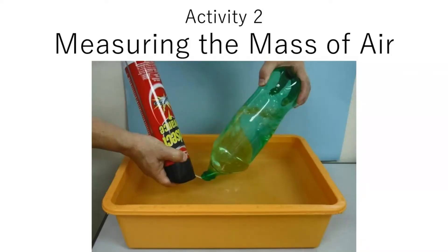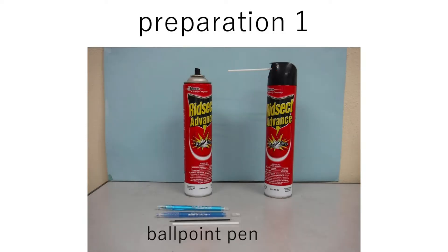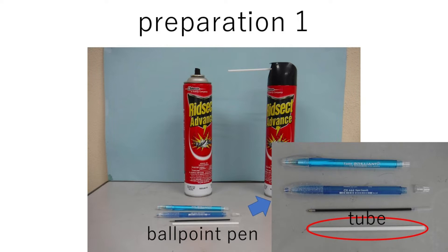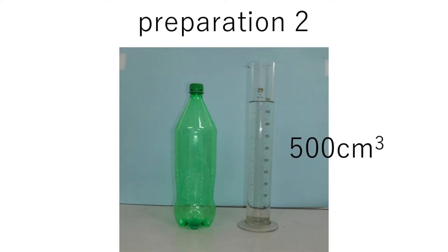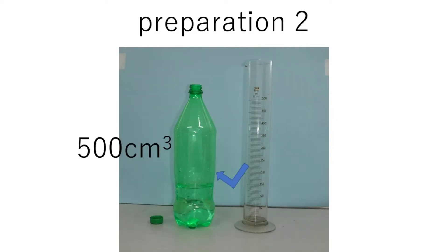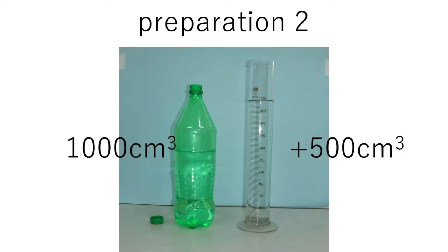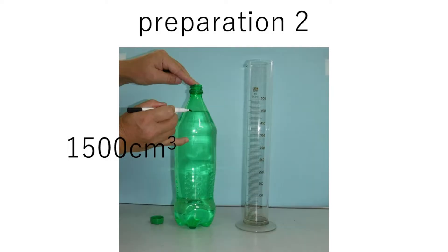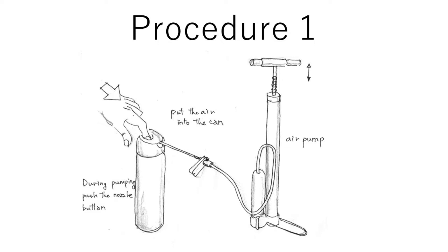Next, let's measure the mass of air. It is needed to attach the tube to the empty spray can. A tube of a ballpoint pen can be used. Check the volume of the plastic bottle. Procedure 1: Push air into the empty spray can with an air pump.